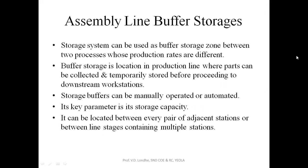For example, if you are considering two process sequences in which the first processing requires one shift, and the second process operates at a slow production rate — the first operation requires only one shift to meet production requirements while the second step requires two shifts to produce the same number of units. In this buffer storage system, a buffer is needed between these two operations to temporarily store the output of the first process. Automated production lines can be designed with storage buffers.